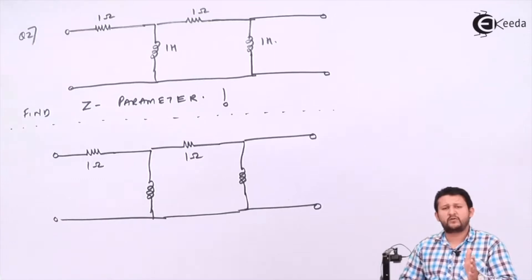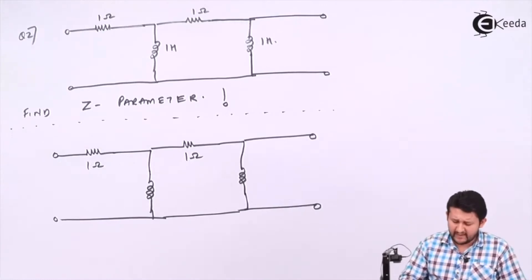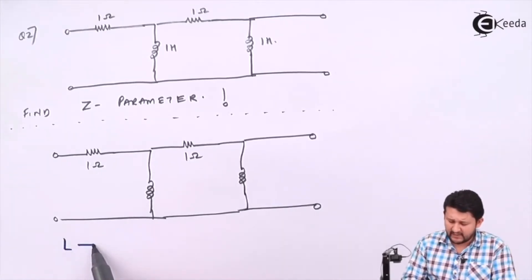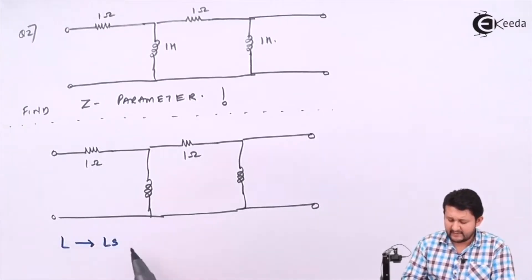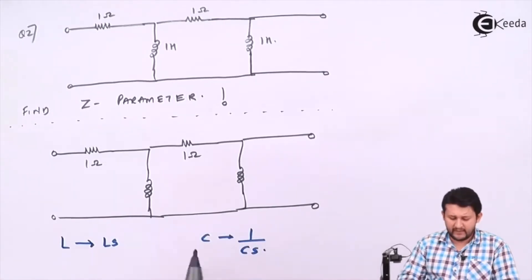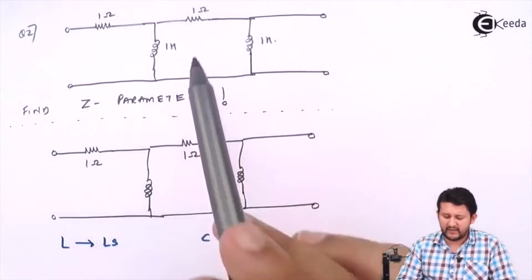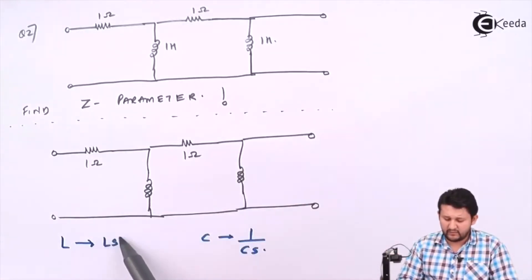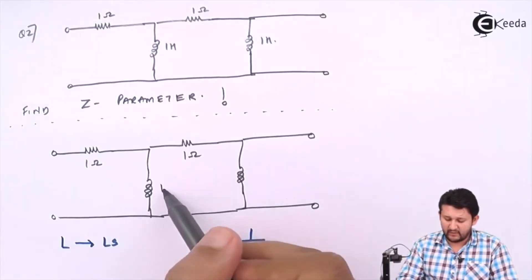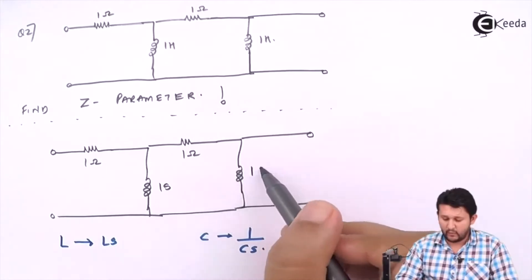Please be sure you need to convert your inductor and capacitor into what's needed. So your L should be represented as Ls and your C should be represented as 1 over Cs. In this case, if I compare, my value of inductor is 1Ω, so it will be 1s. Again, in this case it is 1Ω, it will be 1s.